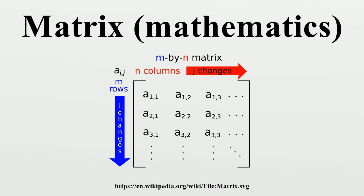Matrices can be used to compactly write and work with multiple linear equations, i.e., systems of linear equations. For example, if A is an M by N matrix, X designates a column vector of N variables x1, x2, ..., xn, and B is an M times 1 column vector, then the matrix equation AX equals B is equivalent to the system of linear equations: a_{1,1}x_1 plus a_{1,2}x_2 plus ... plus a_{1,n}x_n equals b_1, through a_{m,1}x_1 plus a_{m,2}x_2 plus ... plus a_{m,n}x_n equals b_m.